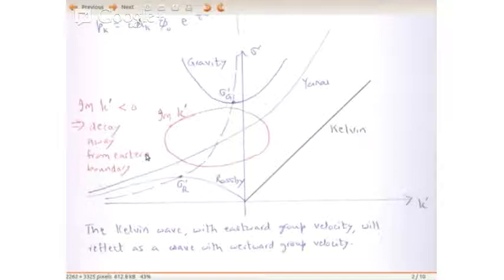Because you have ikx, you have i times i times k_i — the imaginary part of the wave number. So it is i-squared times k_i multiplying x. i-squared is minus 1, and minus 1 times a negative value for the imaginary part is positive. That means if you multiply by minus x — which is what you get for the basin if x equals 0 is at the eastern boundary — then it decays away from the boundary. So we are interested in those k's that have an imaginary part less than 0.